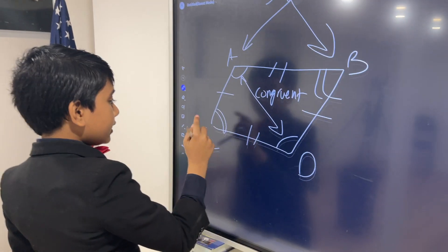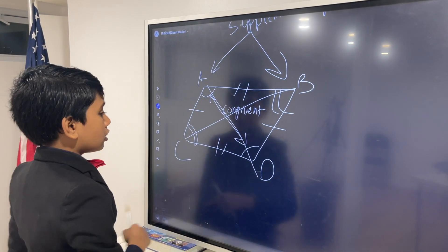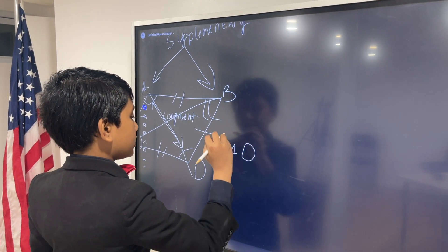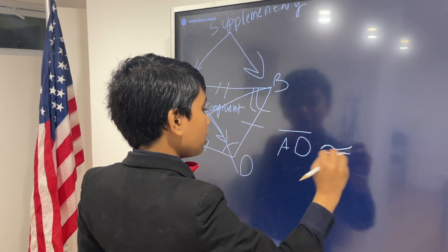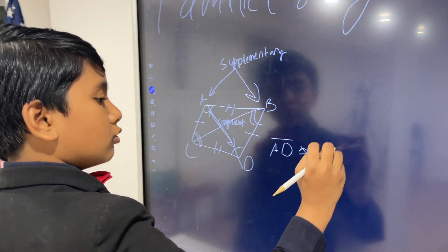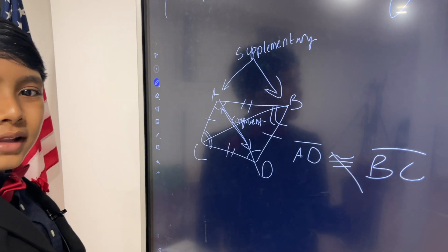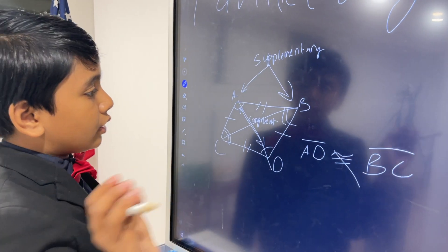Also, if we take the diagonals, the diagonals are not congruent to each other. So, AD is not equal or congruent to BC. The diagonals also cut the parallelogram into two triangles each.